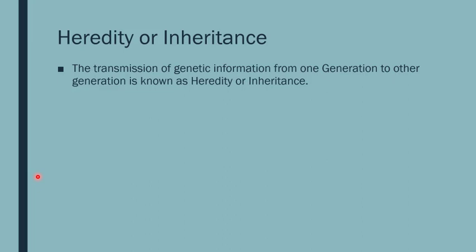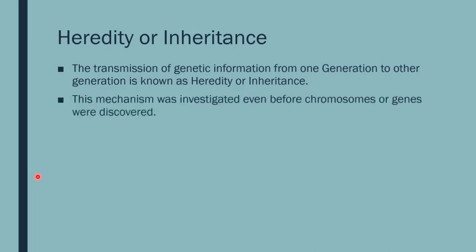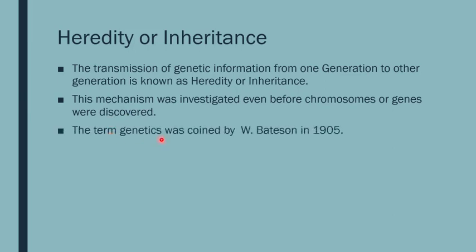What is heredity or inheritance? The transmission of genetic information from one generation to another is termed as heredity or inheritance. This mechanism was investigated even before chromosomes or genes were discovered. The term genetics was coined by W. Bateson in 1905. It includes two important concepts: heredity and variations.